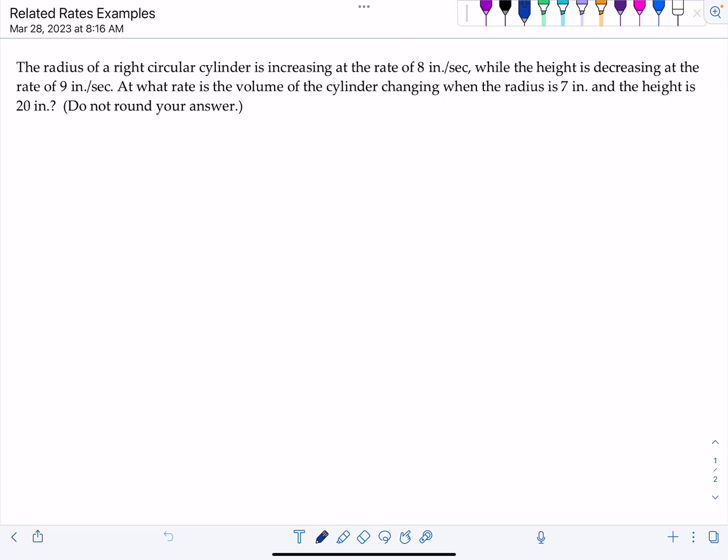First problem says the radius of a right circular cylinder is increasing at a rate of 8 inches per second while the height is, be careful, decreasing at the rate of 9 inches per second. So that means the base is going to be a circle. When they say right, that means the base and the top of the cylinder are at a 90 degree angle from one another. So it's not a slanty cylinder.